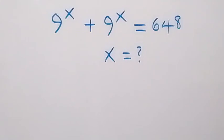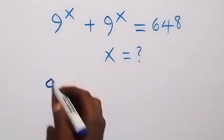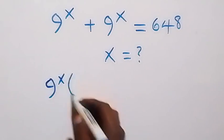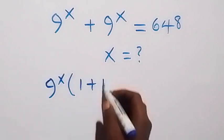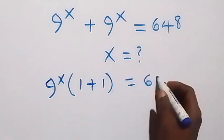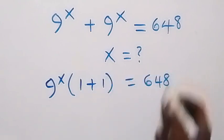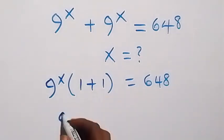Hello, you are welcome. We solve this exponential equation. From here we can factor x out, and here we mean 1 plus 1 which equals 2, so we have x times 2.